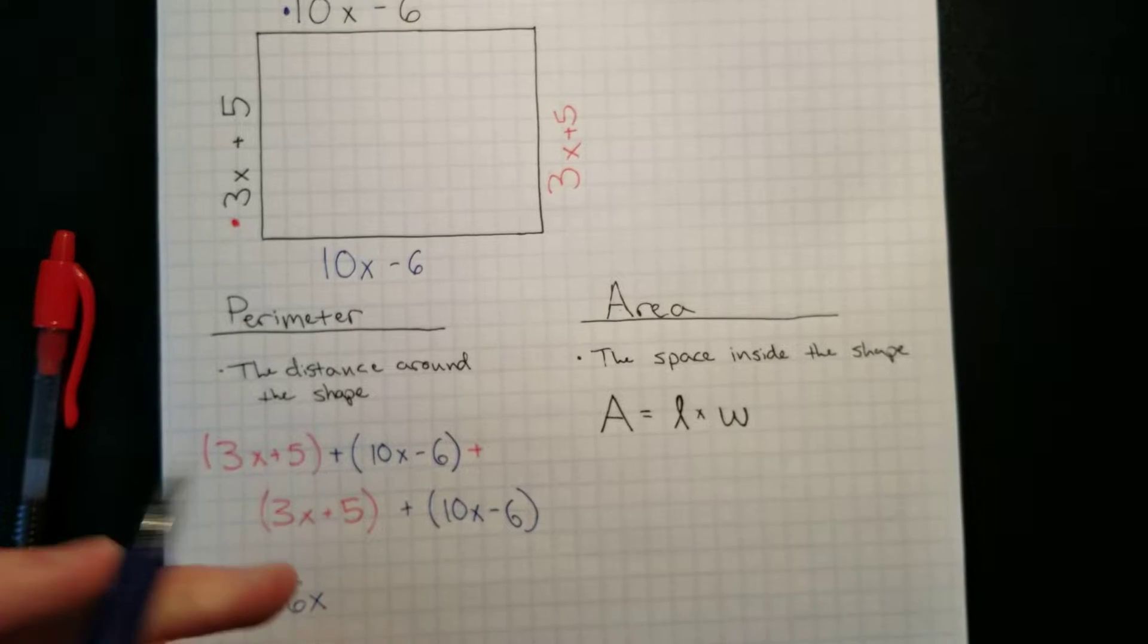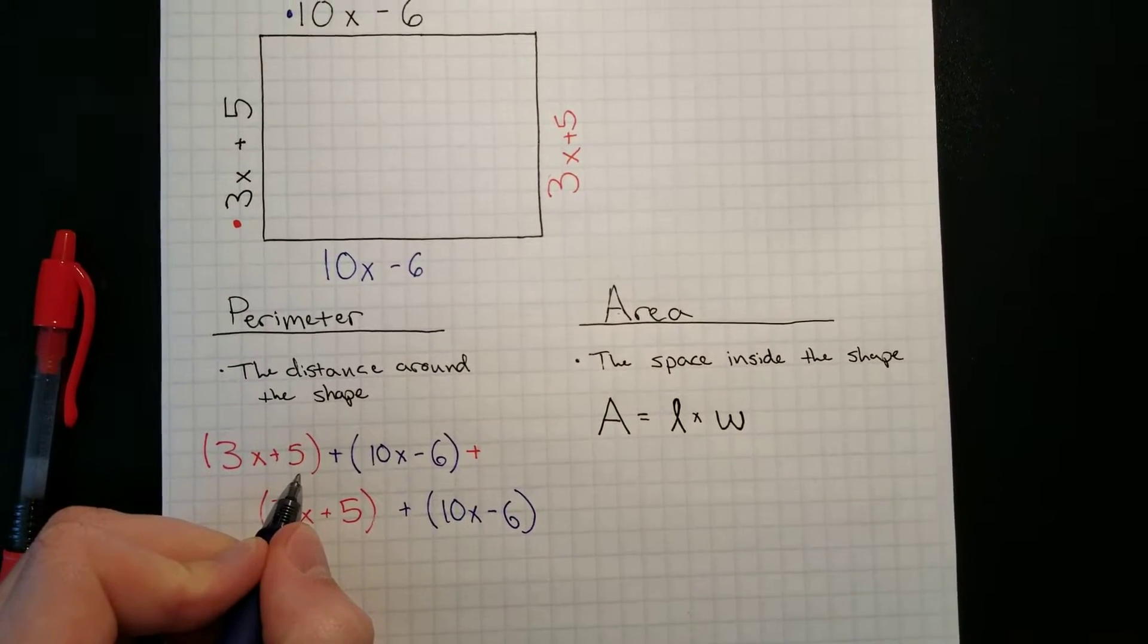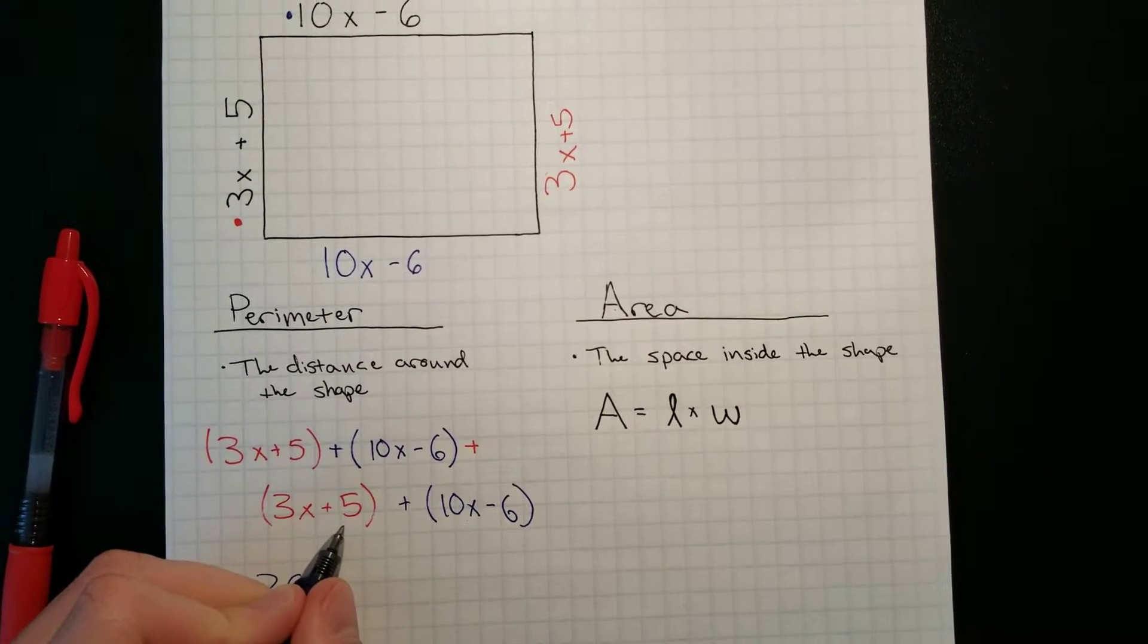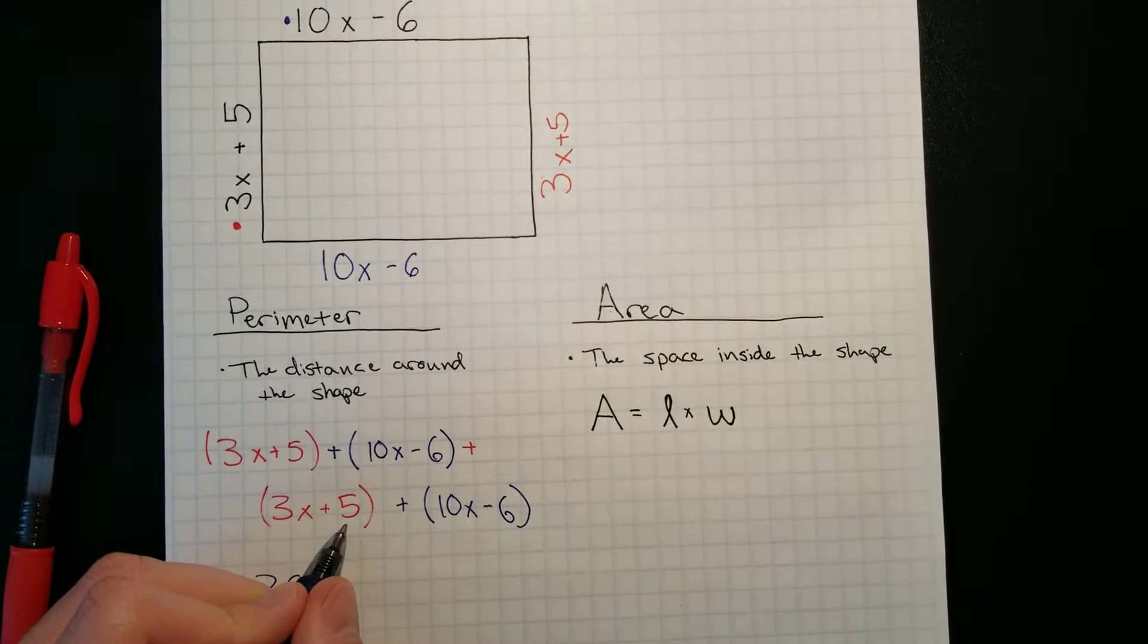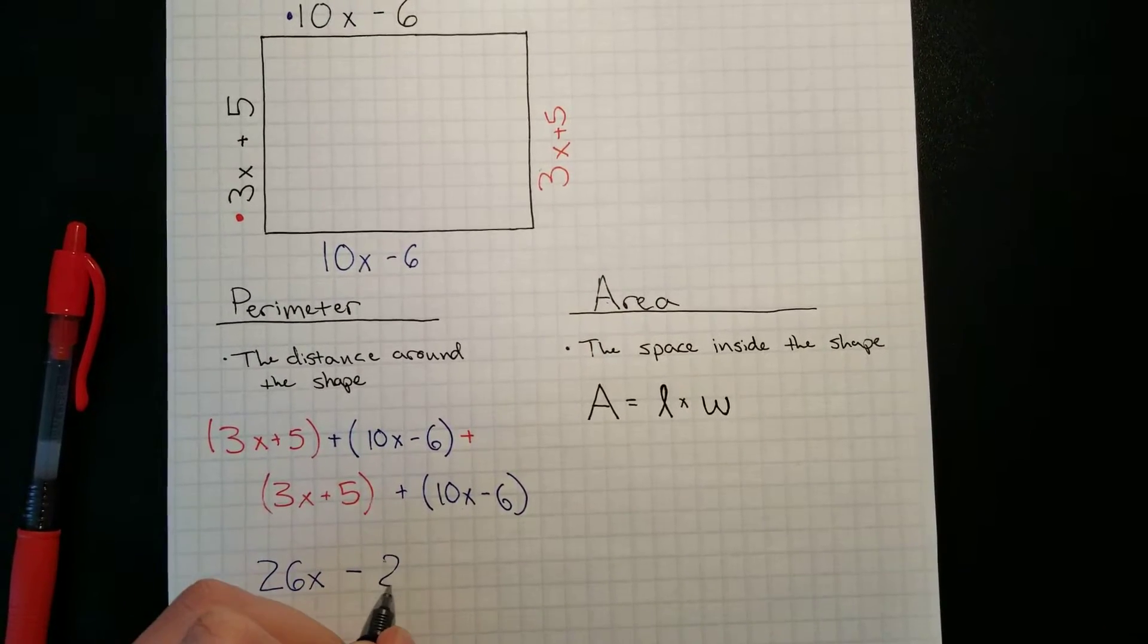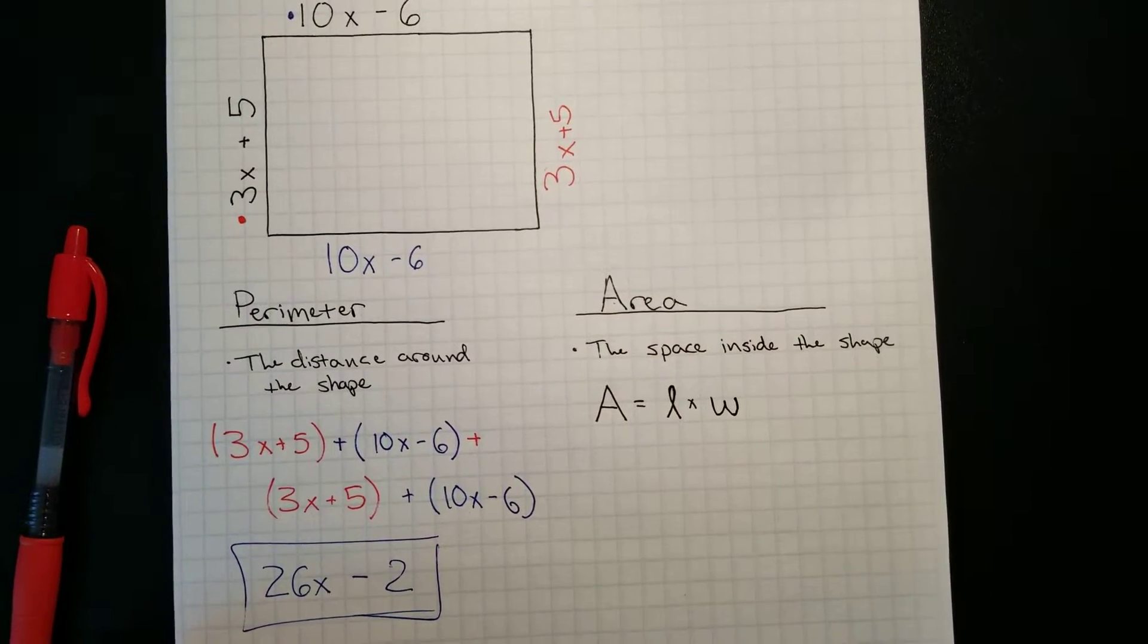And to go through the numbers, which we're going to do separately because we're adding like terms: 5 plus negative 6 is negative 1, plus 5 is positive 4, minus 6 is negative 2. So that means that the perimeter of this shape is 26x minus 2.